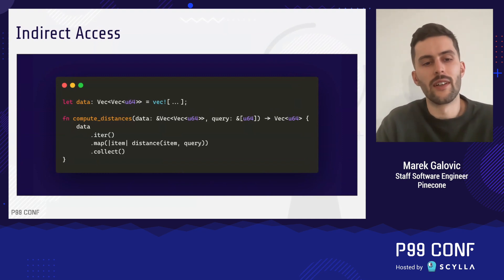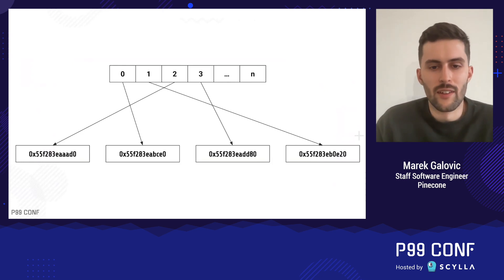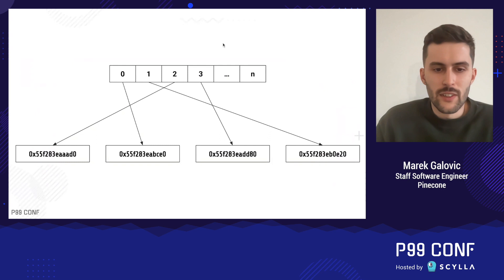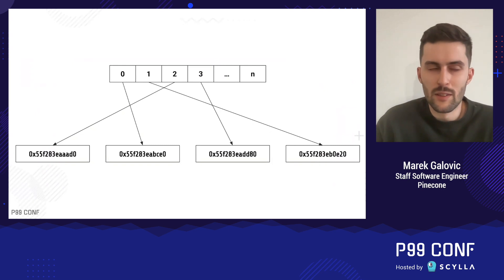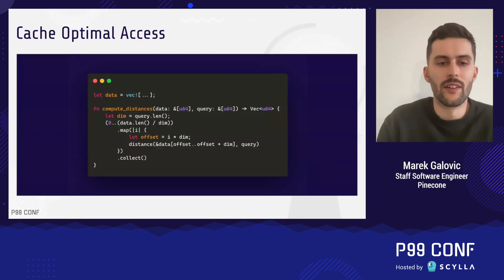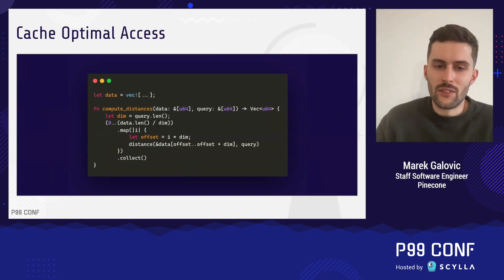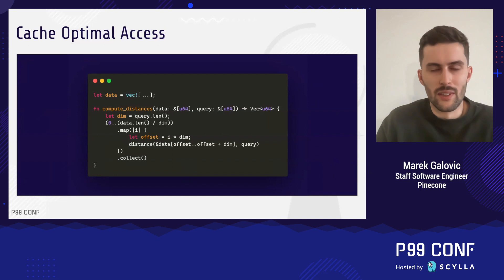An issue with this approach, however, is that because we store the data matrix as a vector of vectors, each row in the data matrix can be stored at an arbitrary location in memory. So accessing the first element in this matrix fetches the vector, but the second element in the matrix could be at some other location which is not already cached in the CPU cache. To alleviate this issue, we can change the data layout to instead store all of the rows in a continuous chunk of memory, so that when we iterate over the matrix rows in sequence, we can leverage CPU prefetching and use more cache-optimal access.